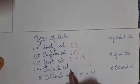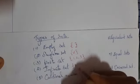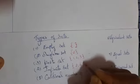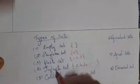Next, infinite set. What is the meaning for infinite set? The numbers you can't count. This is the infinite set.